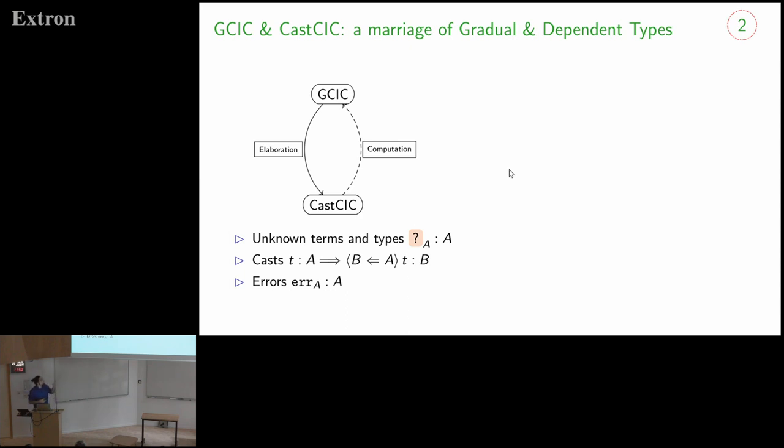But it will come with a few effectful primitives. It will have some unknown terms and types in the cast calculus. It will have cast operators that allow to map any term of type A to a term of type B. And it will have errors. So for this talk, I will concentrate on the cast calculus. If you want to know more about the gradual part, elaboration, and how everything relates, go see the PhD defense of Meven tomorrow.